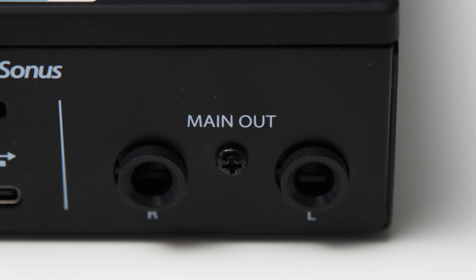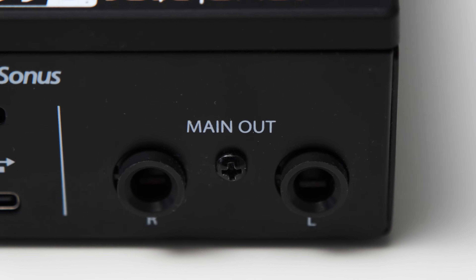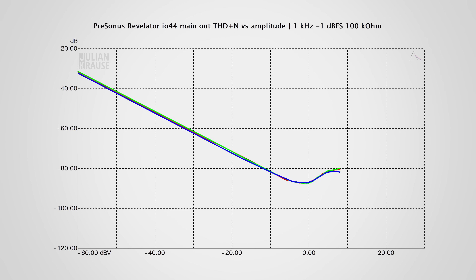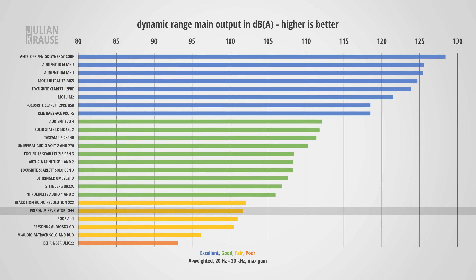The IO44 uses two balanced quarter-inch outputs for the monitors — let's have a look at their performance. The frequency response gives me no complaints. The THD+N versus amplitude graph shows distortion only setting in close to the maximum output level, and even then it stays below minus 80 dB, which is quite good and inaudible in most situations. The performance is also frequency independent, which is great. The maximum output level is around 8 dBV — a bit on the lower side, but acceptable. For dynamic range we once again sit around the 100 dB mark, which is totally okay.